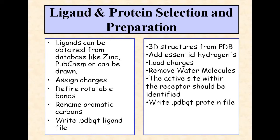For protein selection and preparation, the protein 3D structure is obtained from the PDB (Protein Data Bank). Essential hydrogens are added, charges loaded, water molecules removed if required, the active site within the receptor identified, and the .pdbqt protein file written, as in the case of AutoDock.